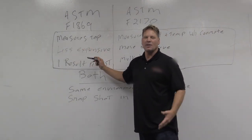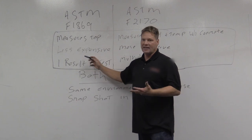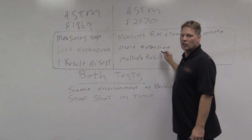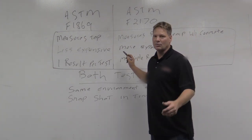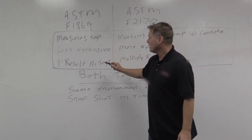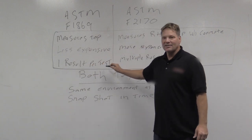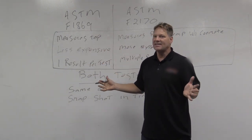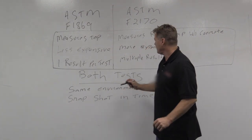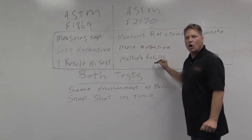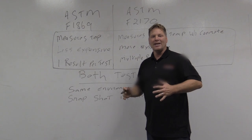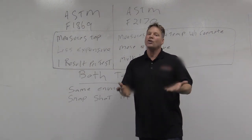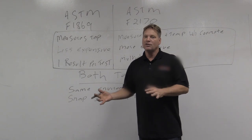The calcium chloride test is less expensive, typically nine to ten bucks per kit. The probes are more expensive, typically a little over twenty dollars per test, and the kit is around six hundred dollars. One result per test when you weigh it—that's it, test over. With the in-situ probes you can leave them in the concrete and actually come back and take another read to see if the relative humidity is increasing or decreasing, which is a nice feature.